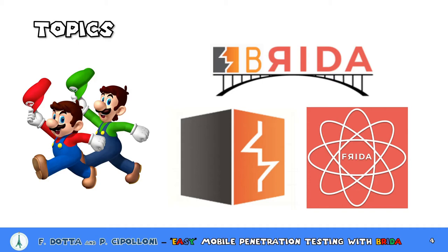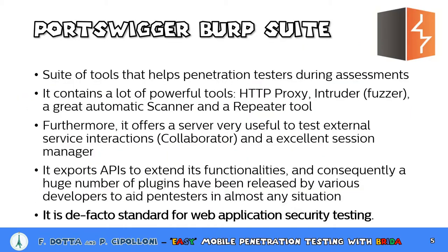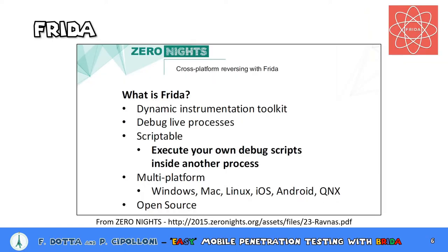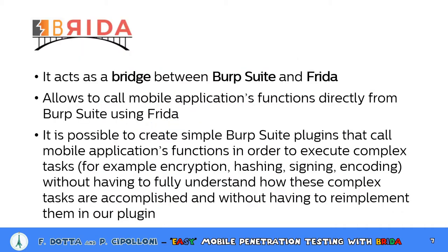What is Brida? Brida is a Burp Suite plugin that acts as a bridge between Burp Suite and Frida. Burp Suite is the de facto standard for web application security testing — a suite of tools including an HTTP proxy, a powerful fuzzer named Intruder, and a great automatic scanner. It also exports APIs allowing easy extension of its functionalities. Frida is a dynamic instrumentation toolkit that allows debugging live processes and is scriptable, enabling execution of debug scripts inside other processes on multiple platforms including Windows, Mac, Linux, iOS, and Android. Frida is open source and is becoming the de facto standard for this type of analysis.